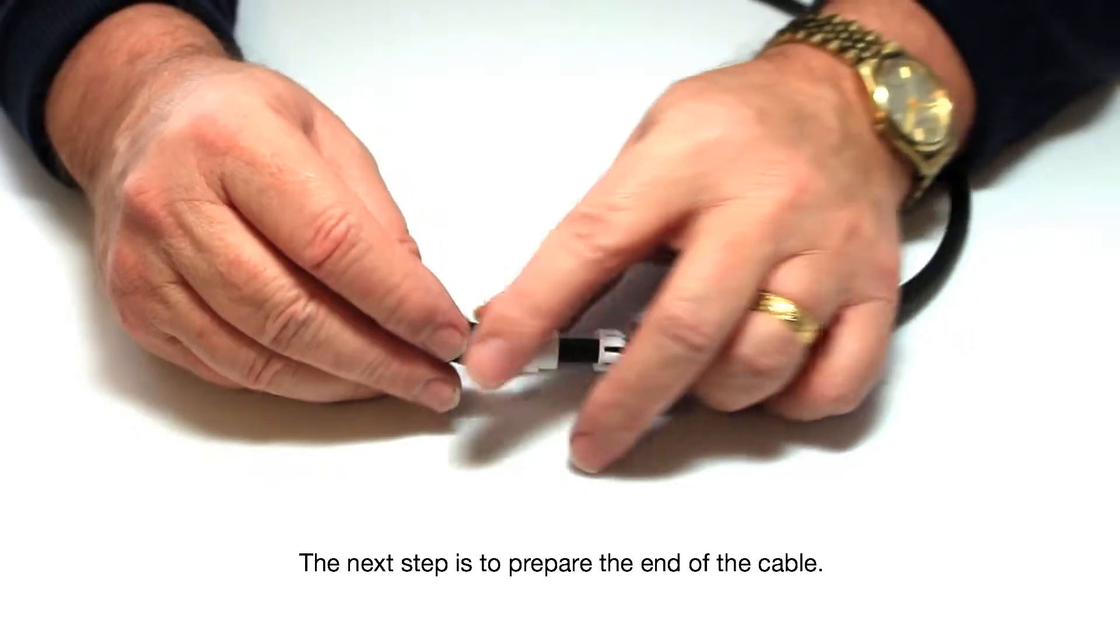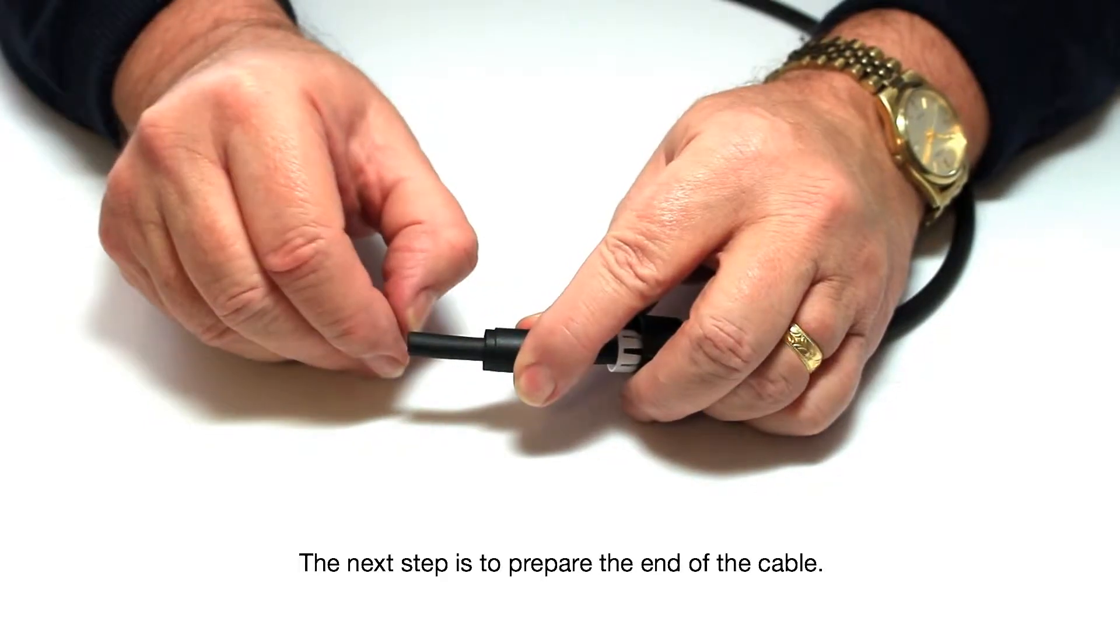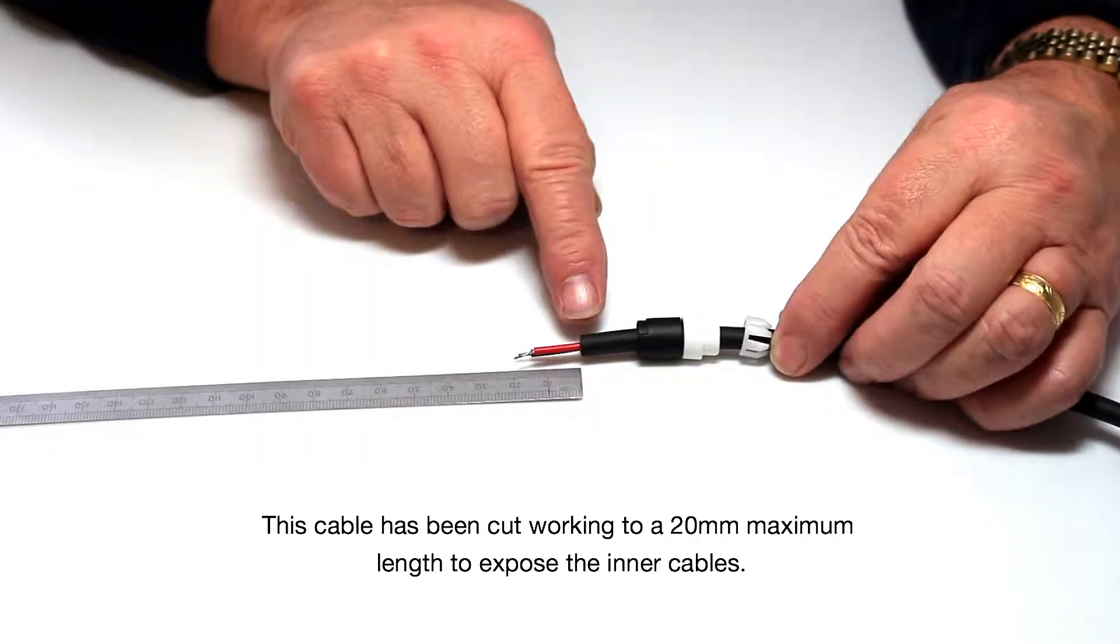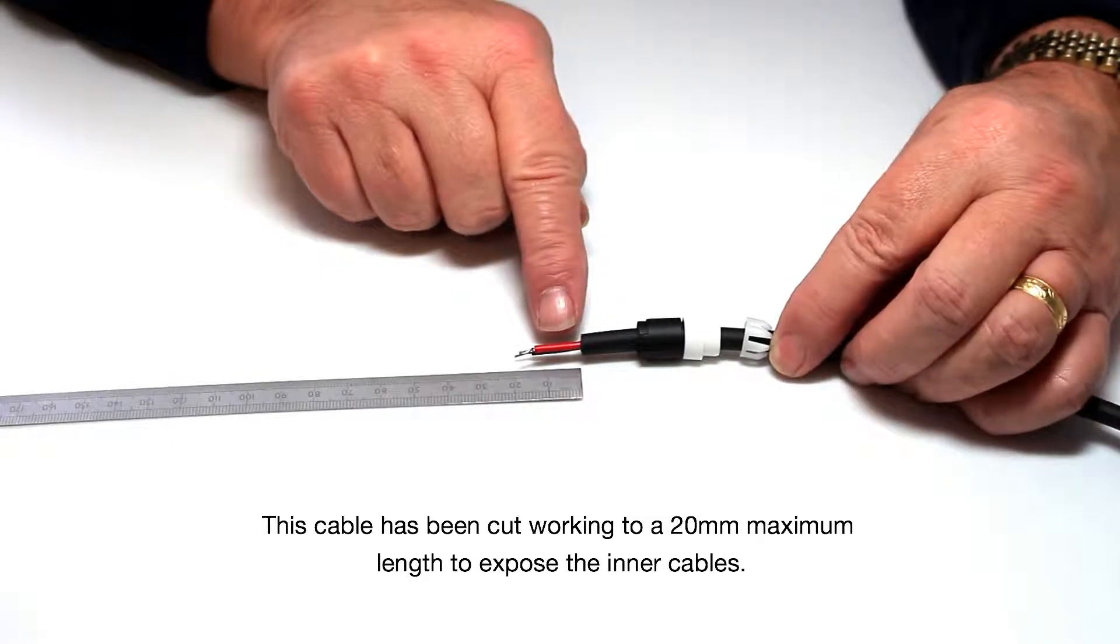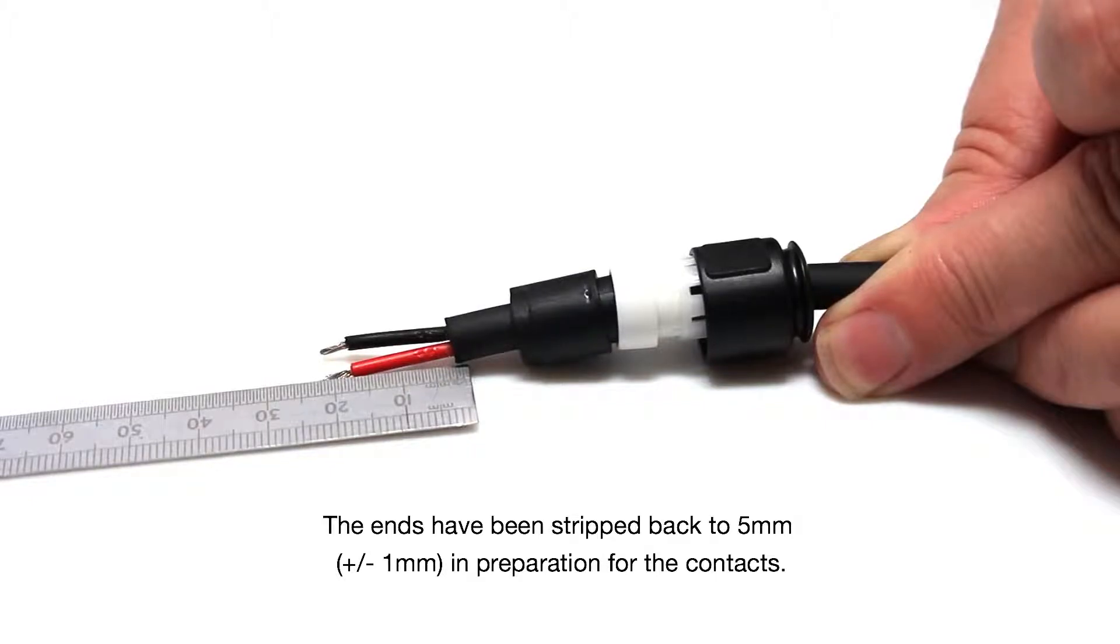The next step is to prepare the end of the cable. This cable has been cut working to a 20mm maximum length to expose the inner cables. The ends have been stripped back to 5mm in preparation for the contacts.